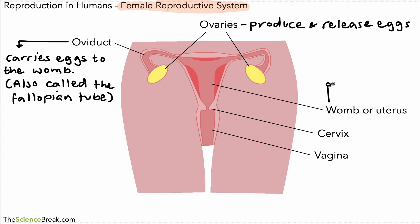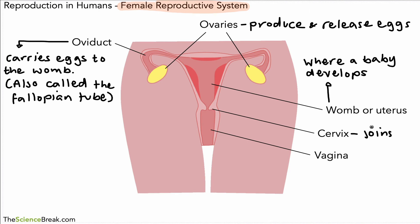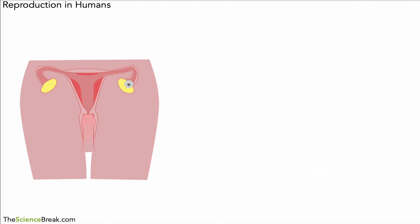The womb is the part of the reproductive system where a baby develops, usually over about nine months — we call it a fetus as it's developing. The cervix is the entry point to the uterus and it joins with the vagina. So that is the female reproductive system.